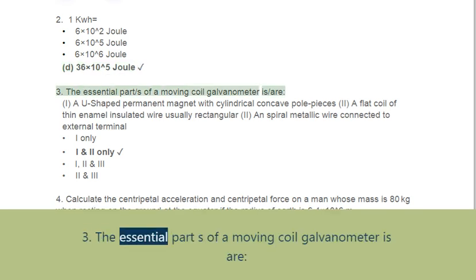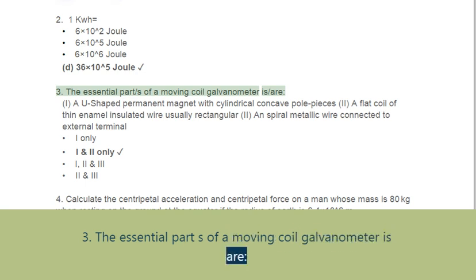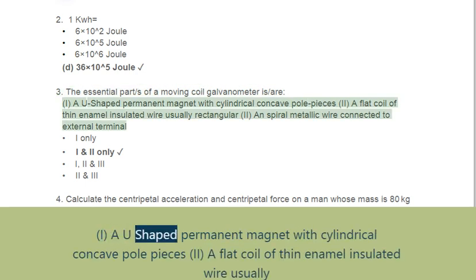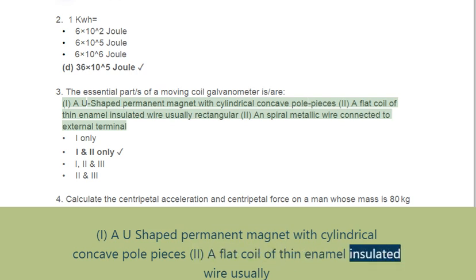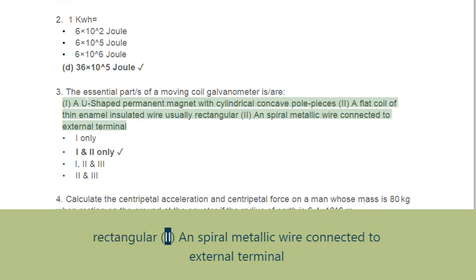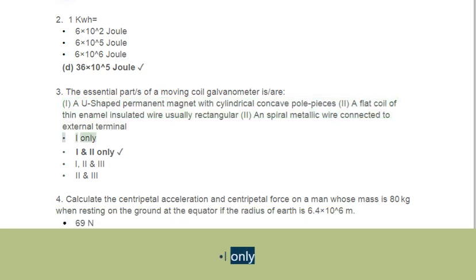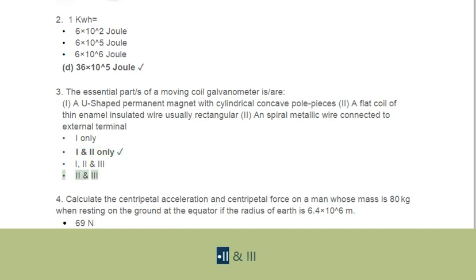Question 3: The essential parts of a moving coil galvanometer are: 1. A U-shaped permanent magnet with cylindrical concave pole pieces. 2. A flat coil of thin enamel insulated wire, usually rectangular. 3. Spiral metallic wire connected to external terminal. Options include combinations: 1 and 2, 2 and 3, or all three.